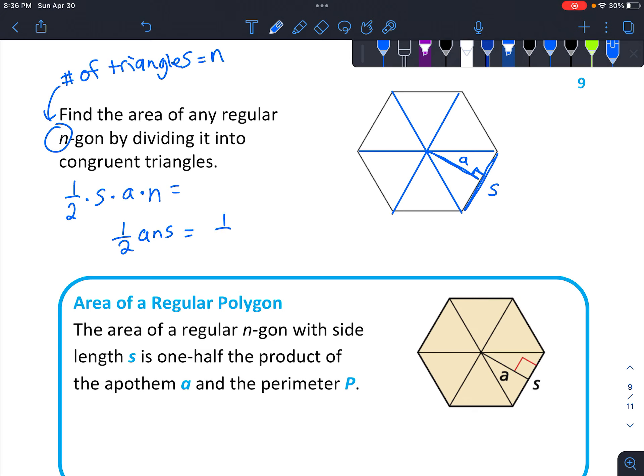And then another form of that would be one-half A times perimeter. So if you happen to have the total perimeter, you could use that instead of having the length of each side and multiplying by the number of sides.